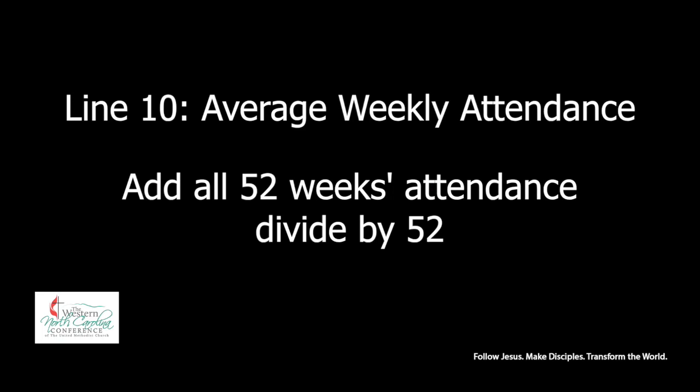For weekly attendance, look at your attendance in all 52 weeks, add all that up, then divide by 52 to get your average weekly attendance. In the past we dropped off the highest and lowest, but now we put them all in together. If you have a Sunday you're actually closed — because of snow or an ice storm where most churches lost power — you wouldn't count that day, so it would be only 51 weeks instead of 52. Perfectly acceptable.